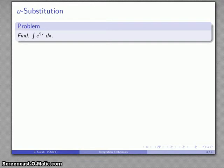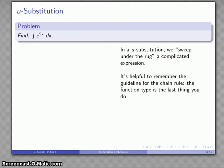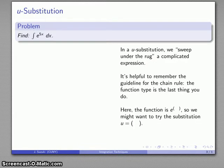So we want to find the antiderivative of e to the power of 5x dx. Now, in a u-substitution, what we're going to do is we're going to sweep under the rug a complicated expression. What do we mean by a complicated expression? Well, it's helpful to remember one of the basic guidelines for the chain rule. The type of function that we're dealing with is the last thing that you do. And so the expression that we're going to sweep under the rug, at least initially, is something that's going to make it more clear what type of function we're dealing with.